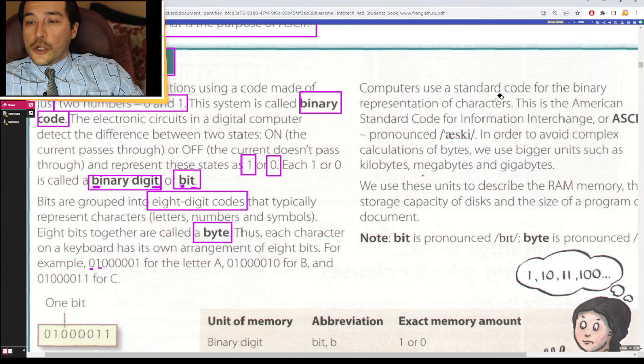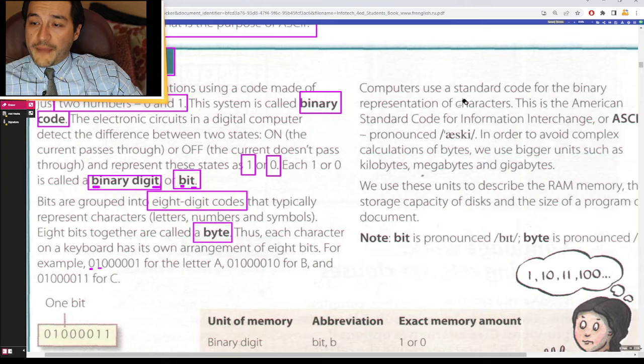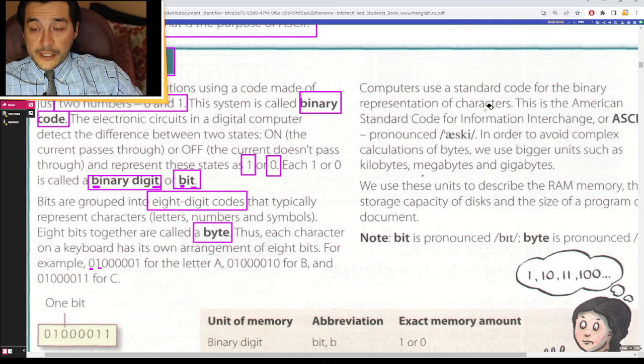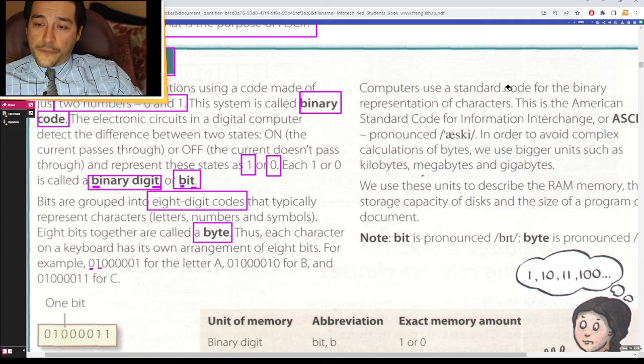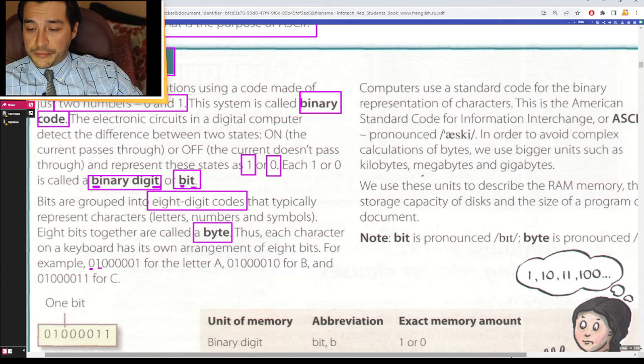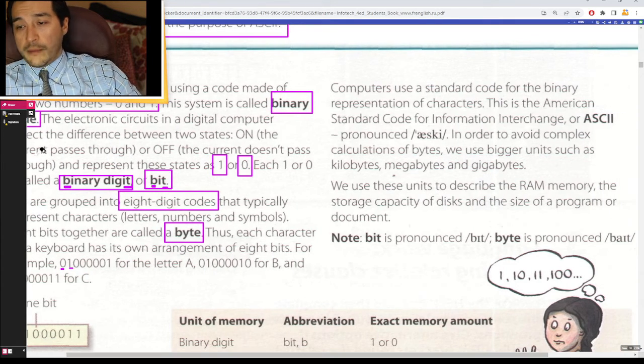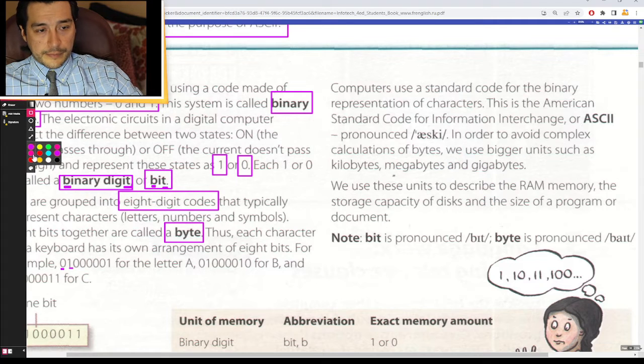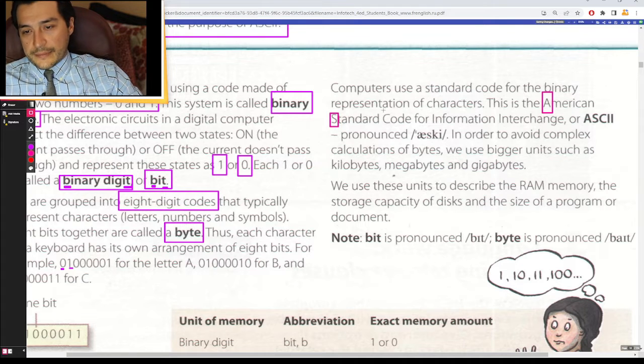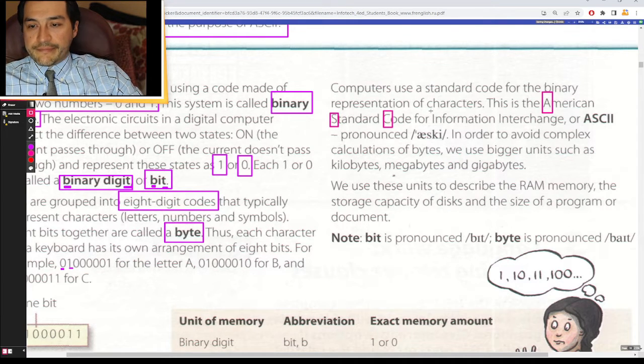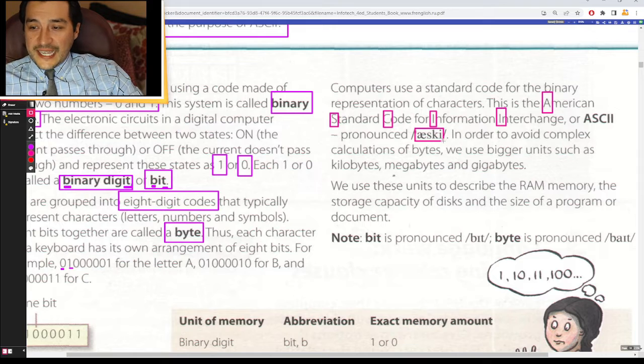Computers use a standard code for the binary representation of characters. This is the American Standard Code for Information Interchange, or A-S-C-I-I. Pronounced ASCII?